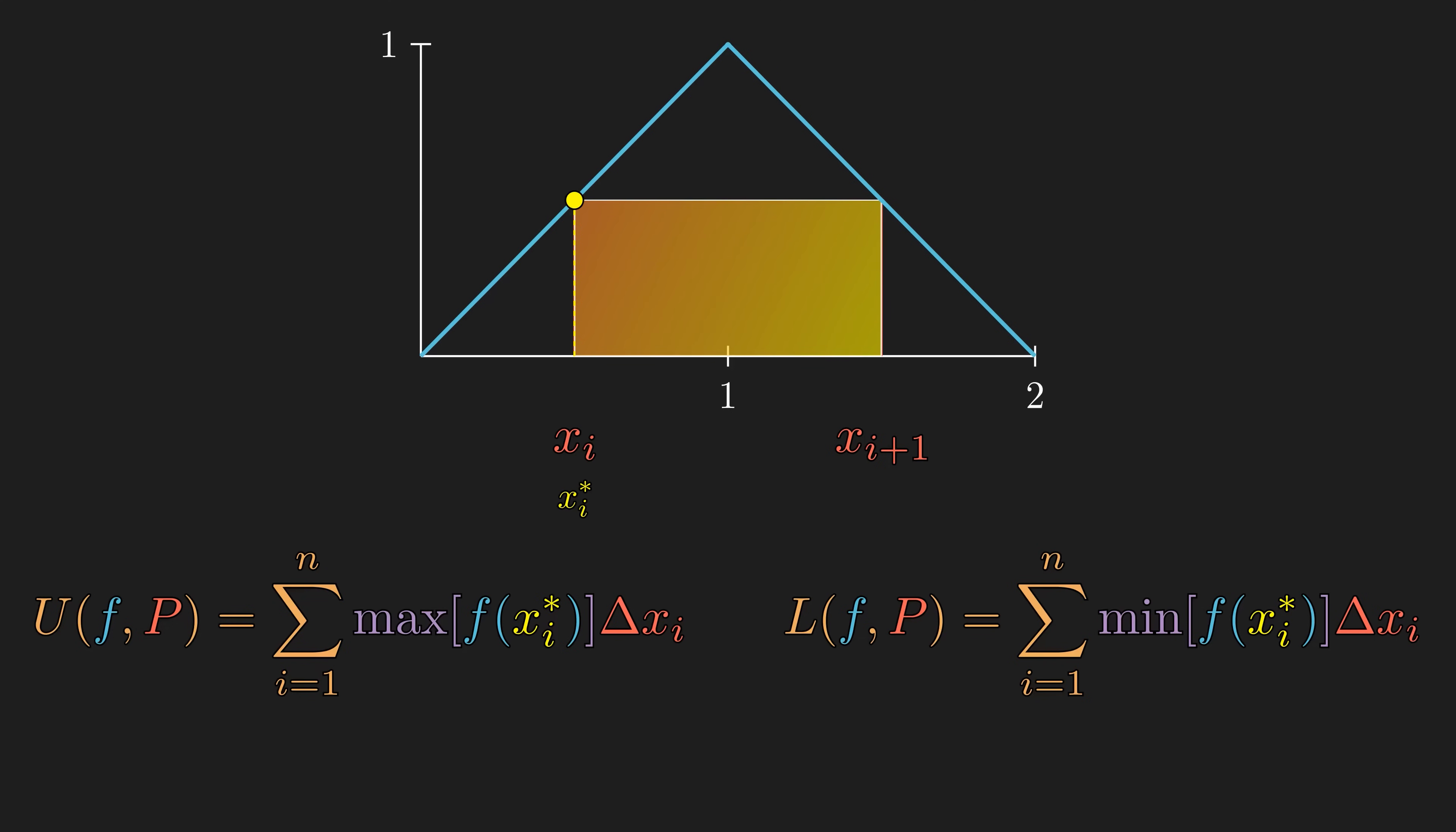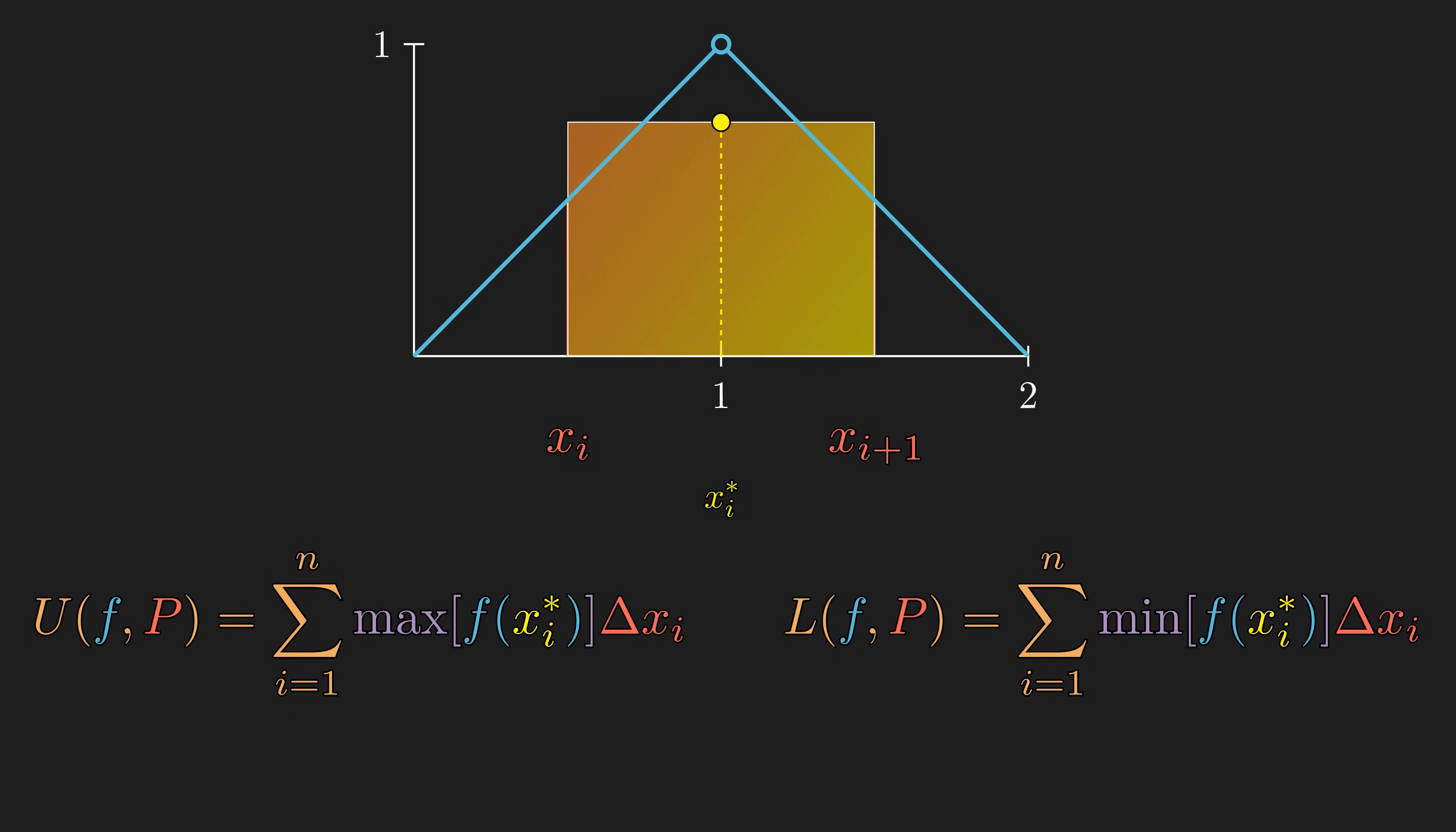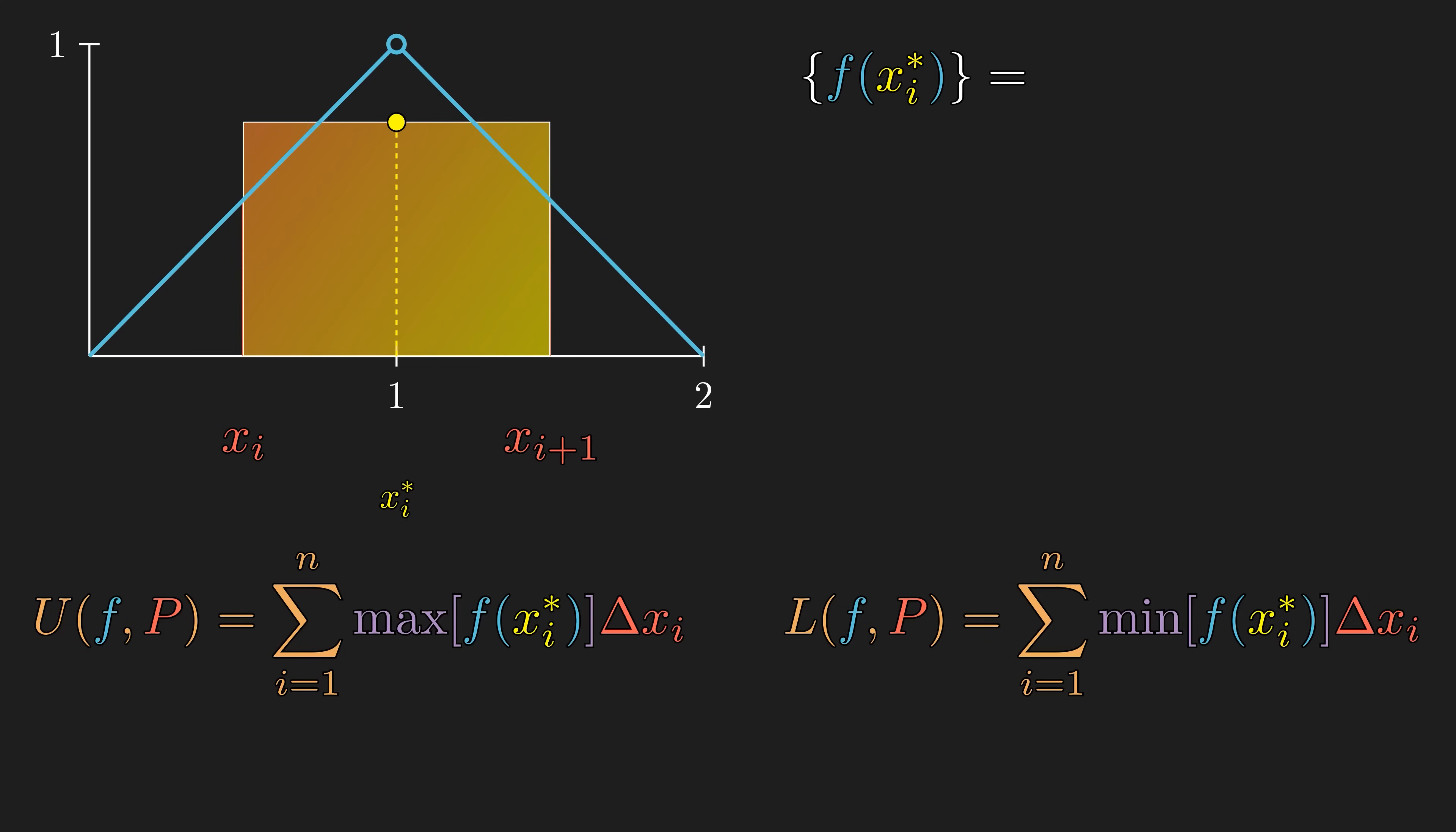But there is a slight problem with this definition. What if the function has a discontinuity like this, so that it's actually impossible to get the maximum height? In particular, this function can take on any heights from one half to one, excluding one. The minimum exists, which is equal to one half, but the maximum does not exist. We can sample a height arbitrarily close to one, like 0.999 repeating finitely many times, but we can't actually attain the height of one.